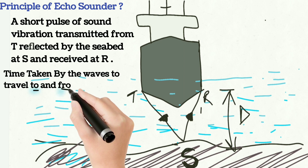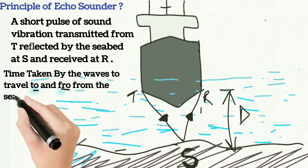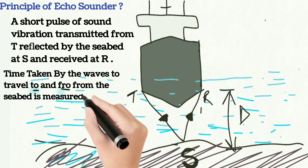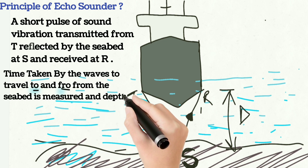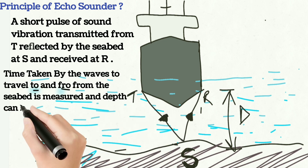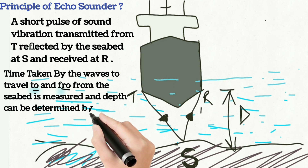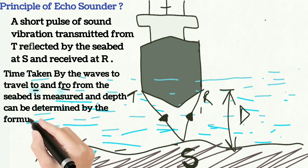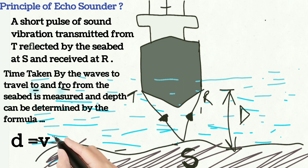The time taken by the waves to travel to and fro from the seabed is measured, and the depth can be determined by the formula: D equals the velocity of acoustic waves in seawater multiplied by the time interval for the acoustic wave to travel to and fro from the seabed, divided by 2.